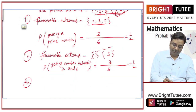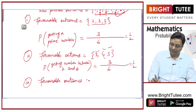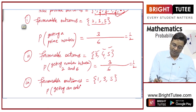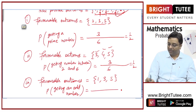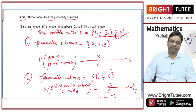What is the probability of getting an odd number? The favorable outcomes are 1, 3, and 5 — that is 3 favorable outcomes out of 6 total. So the probability of getting an odd number is 3/6, which equals 1/2.